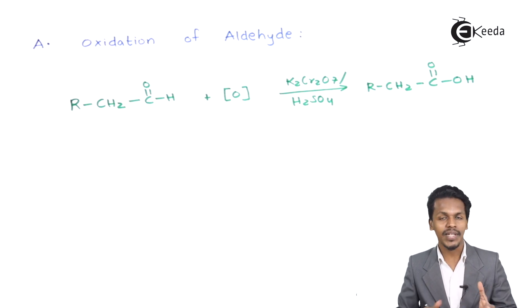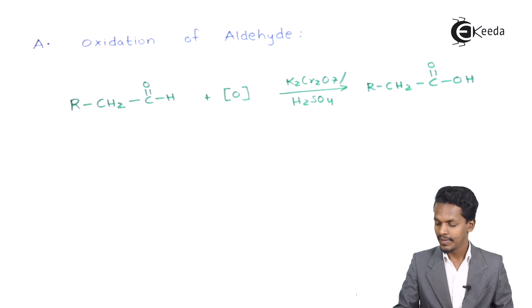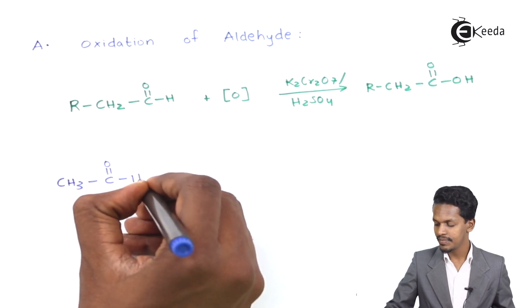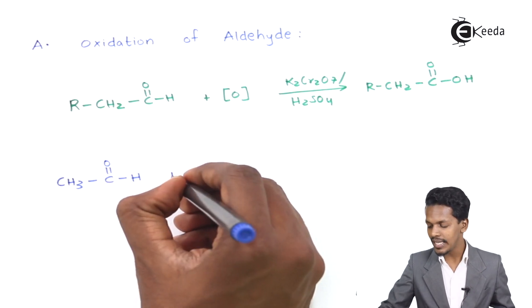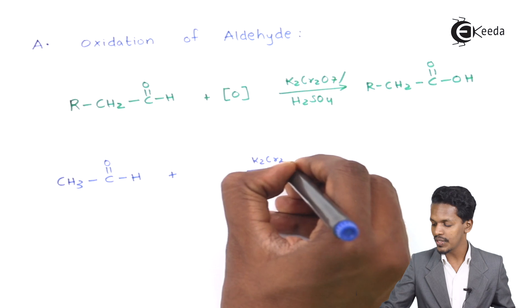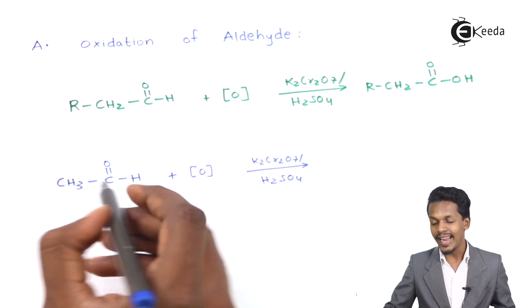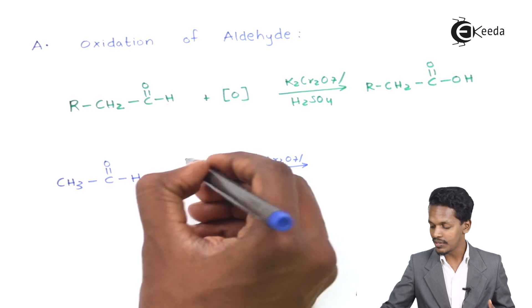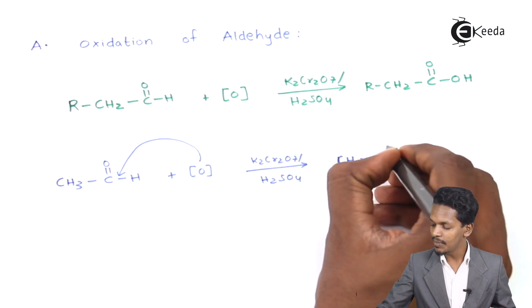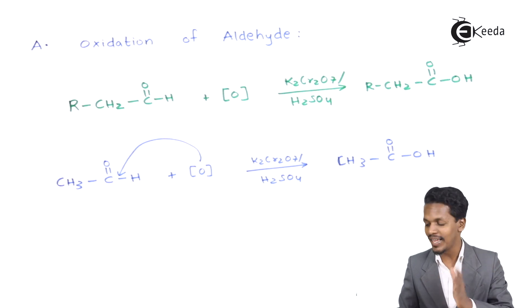Let us look at an example. Suppose we have ethanal, CH₃CHO. If this undergoes an oxidation reaction in the presence of K₂Cr₂O₇ under acidic conditions with H₂SO₄, the nascent oxygen attacks the carbon and hydrogen. The oxygen is added between the carbon and the hydrogen, and the product we get is CH₃COOH — acetic acid. This is how we convert an aldehyde into a carboxylic acid.